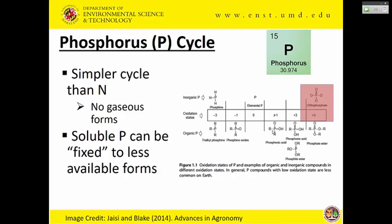Now switching to phosphorus, which has a simpler cycle and different issues than nitrogen. It has no gas form, which could be good or bad. With nitrogen, we can convert it to gas form and clear fields of excess nitrogen. But with phosphorus, it's not going anywhere — it's going to stay in the soils. We have phosphorus that's soluble, phosphorus that can be fixed and slowly move to other forms. The most critical form in soils is orthophosphate, although organic phosphorus and other forms are also present.